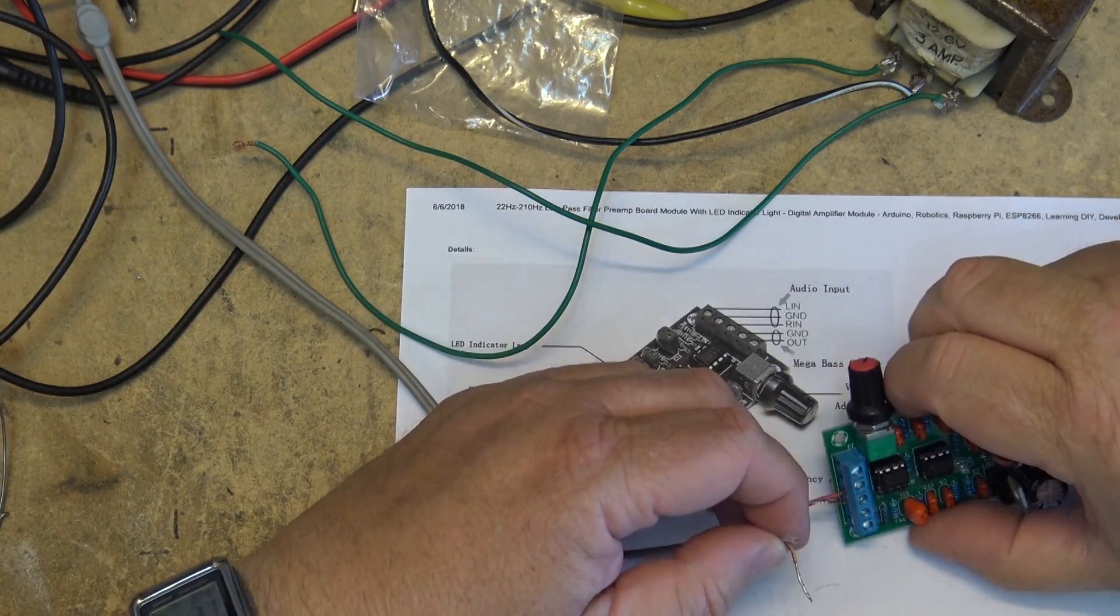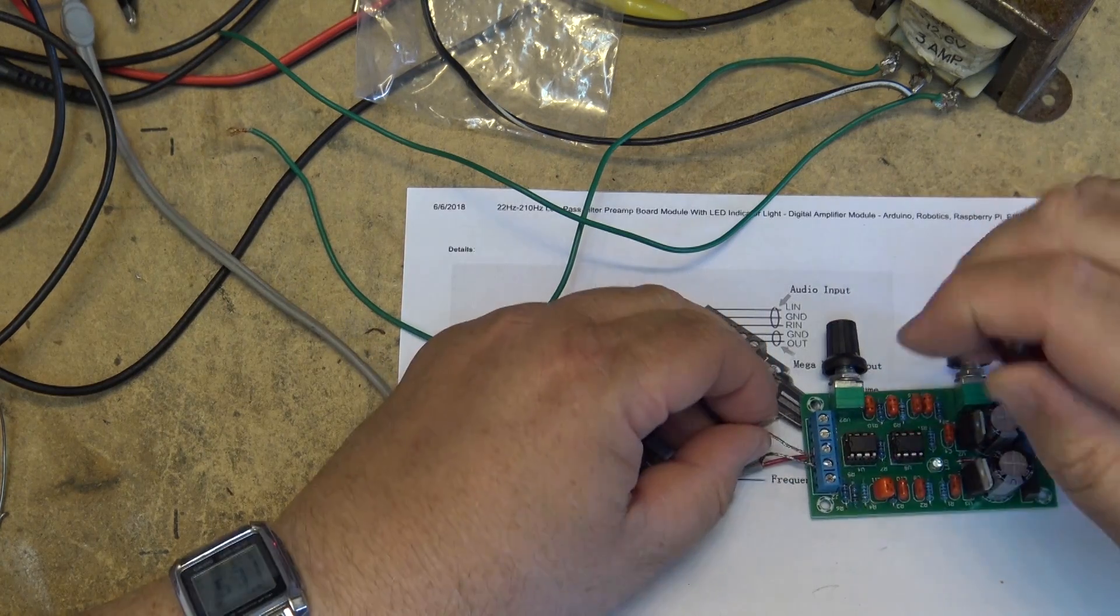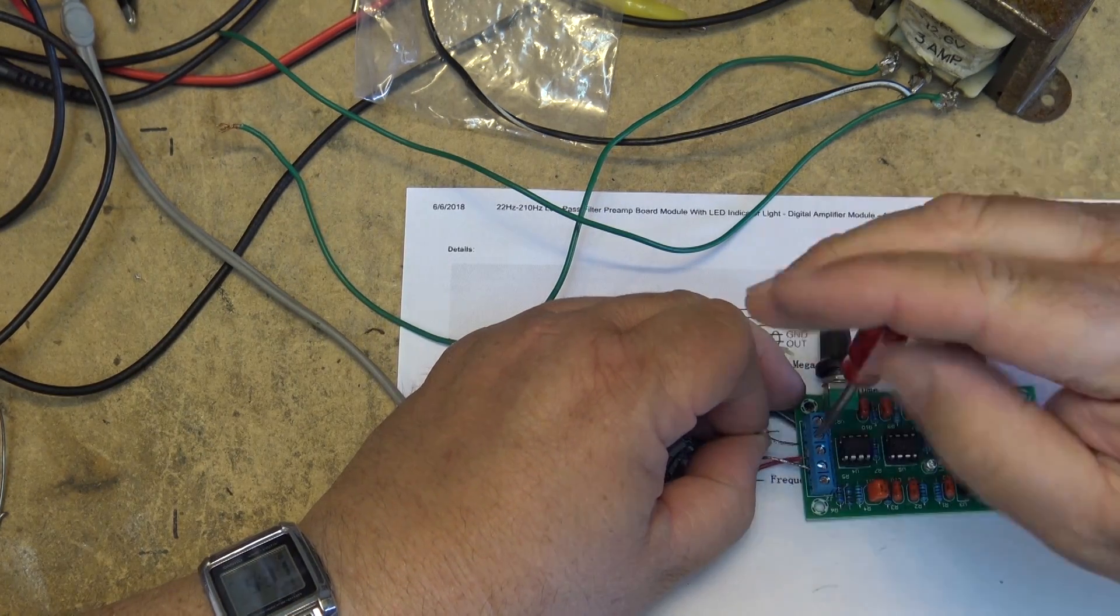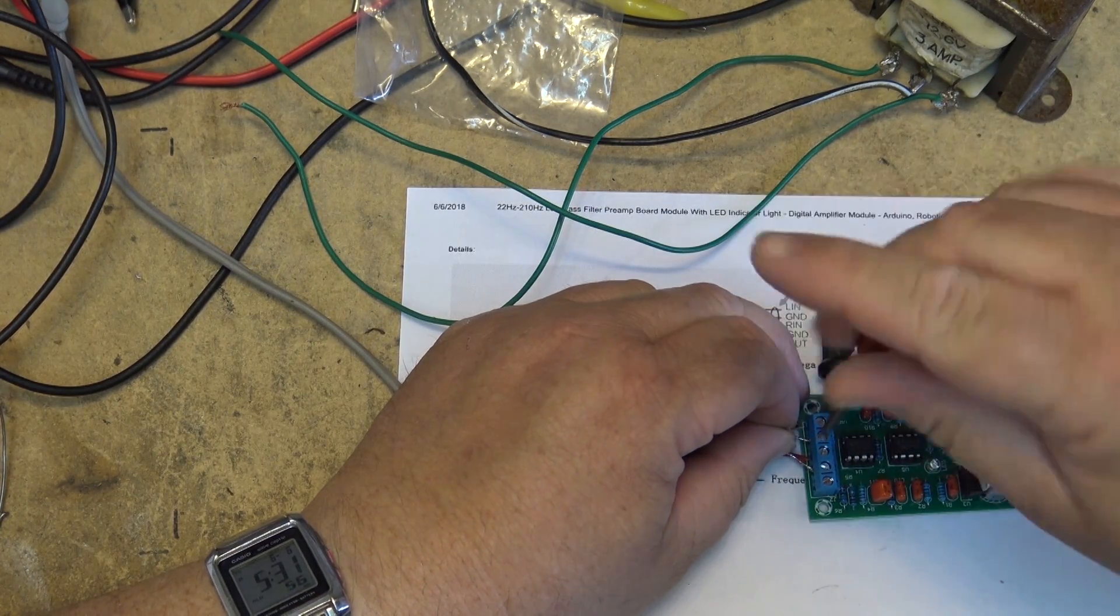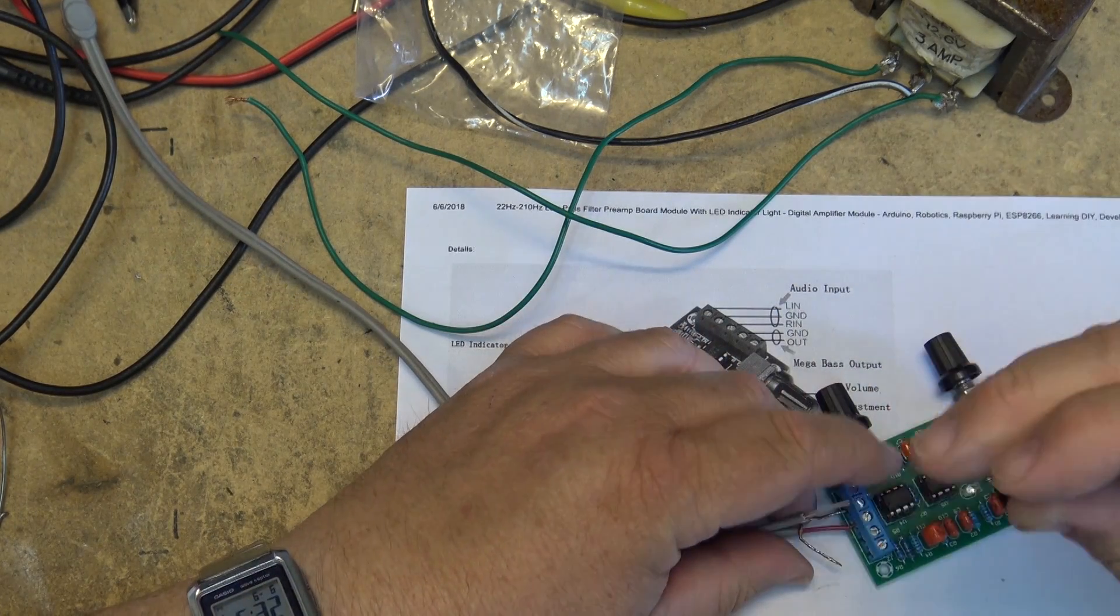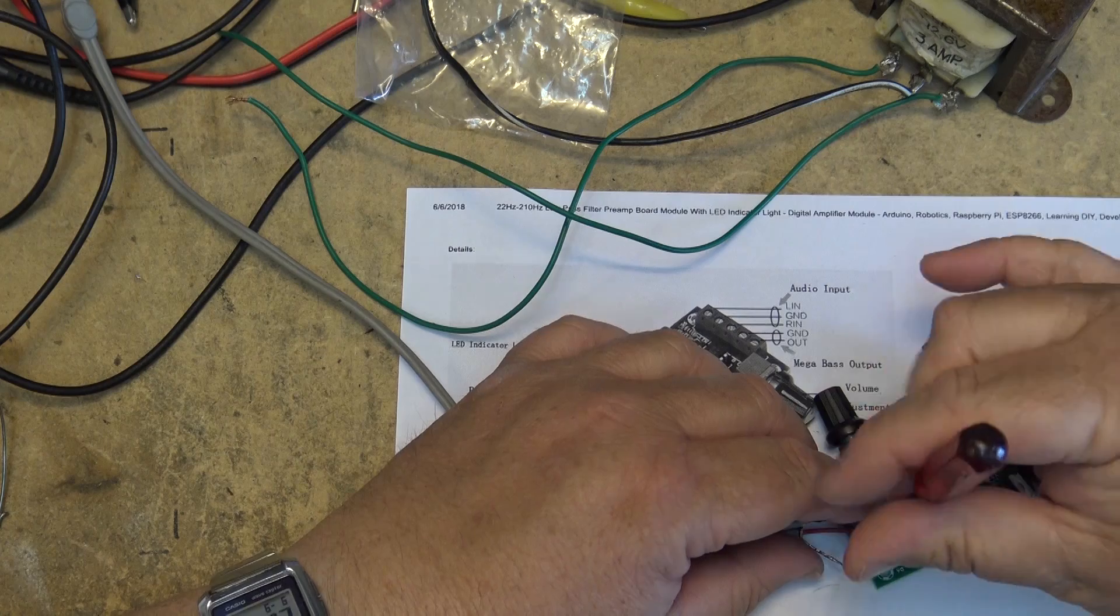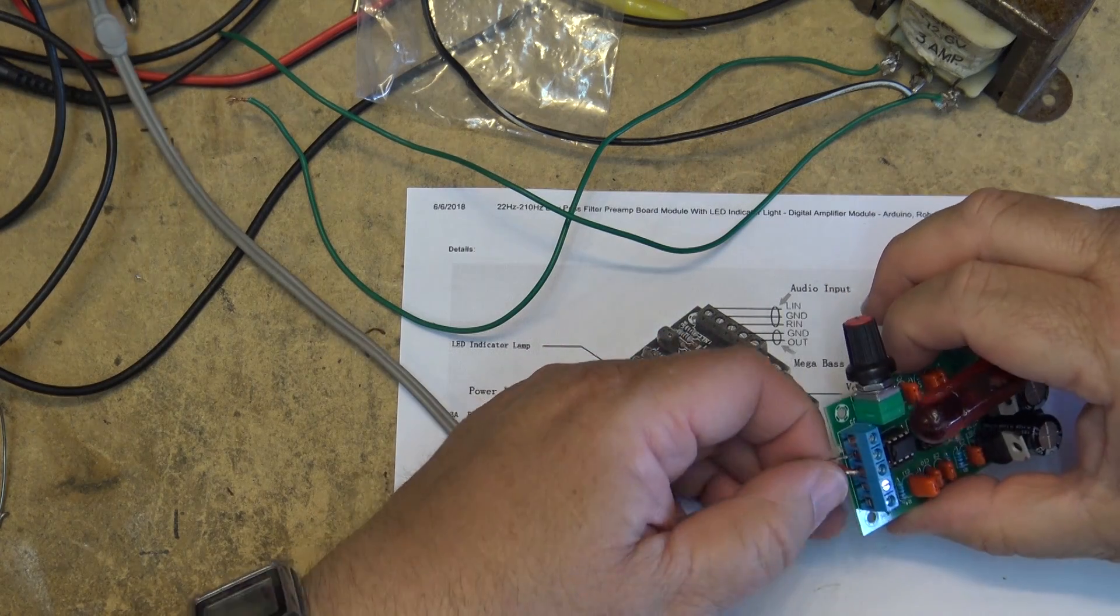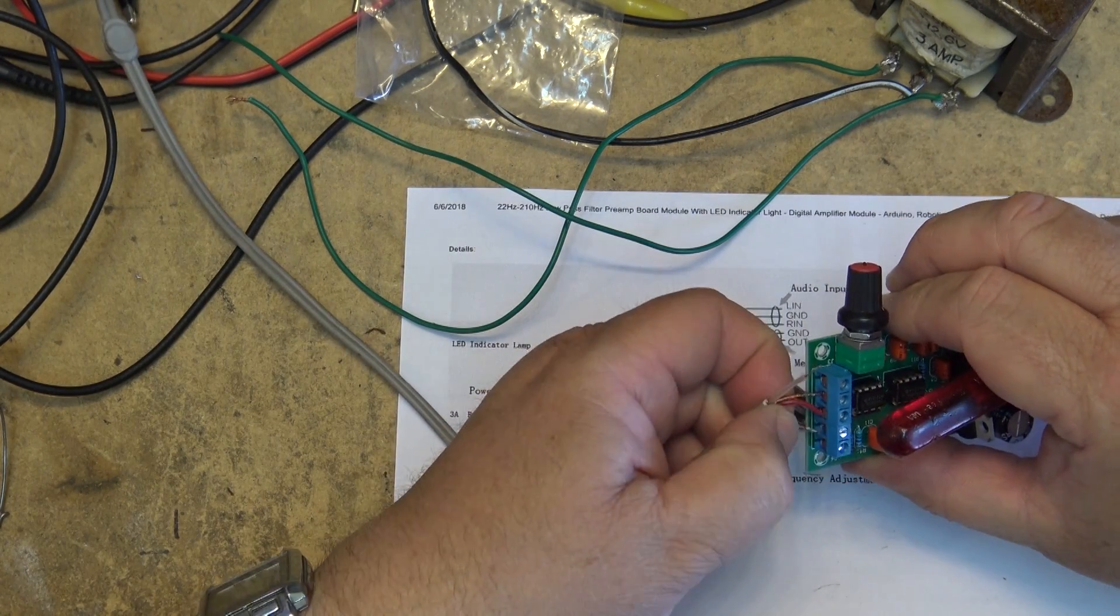There's the line input and this is the output. Ground and the output. I'm only hooking up a single input. I'm not going to hook it up for stereo because it's not necessary for the demo.